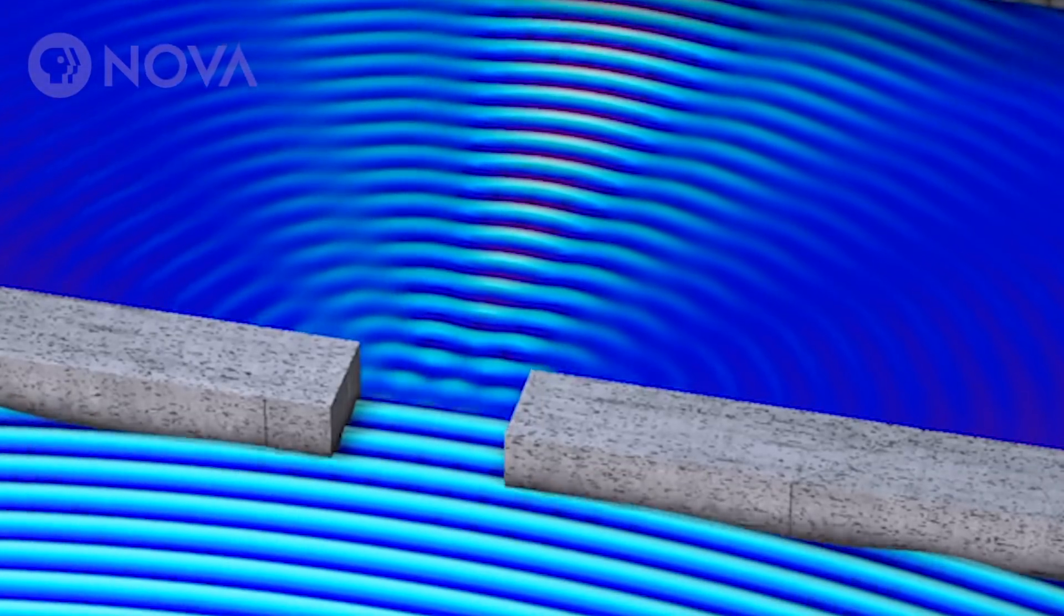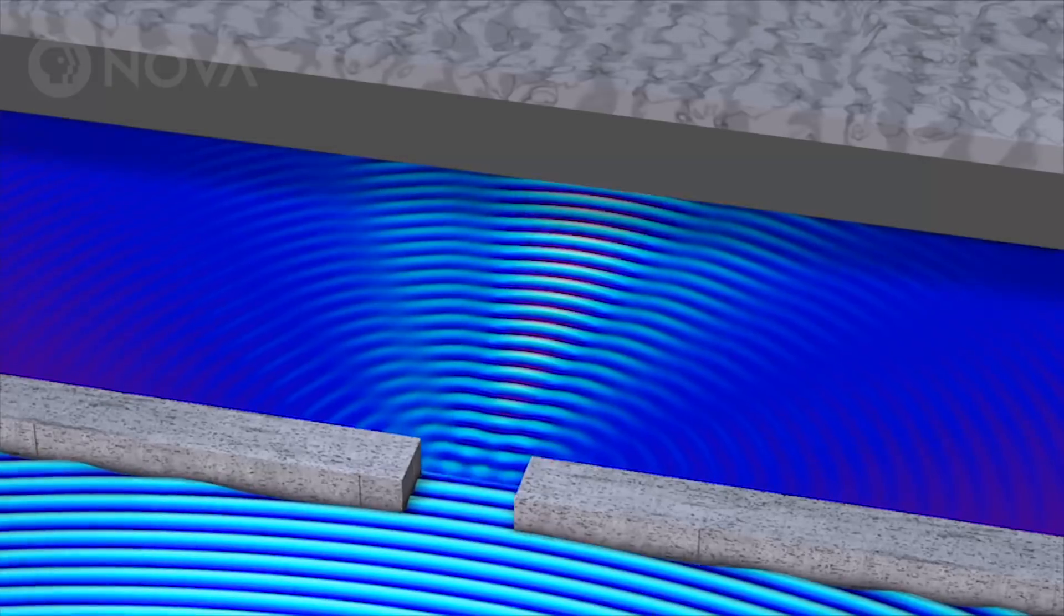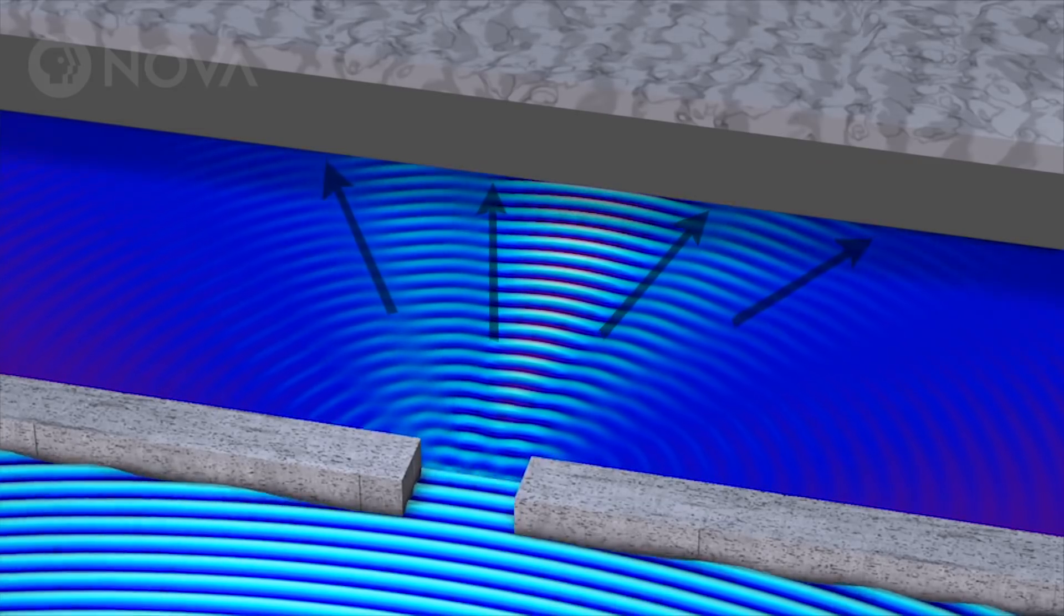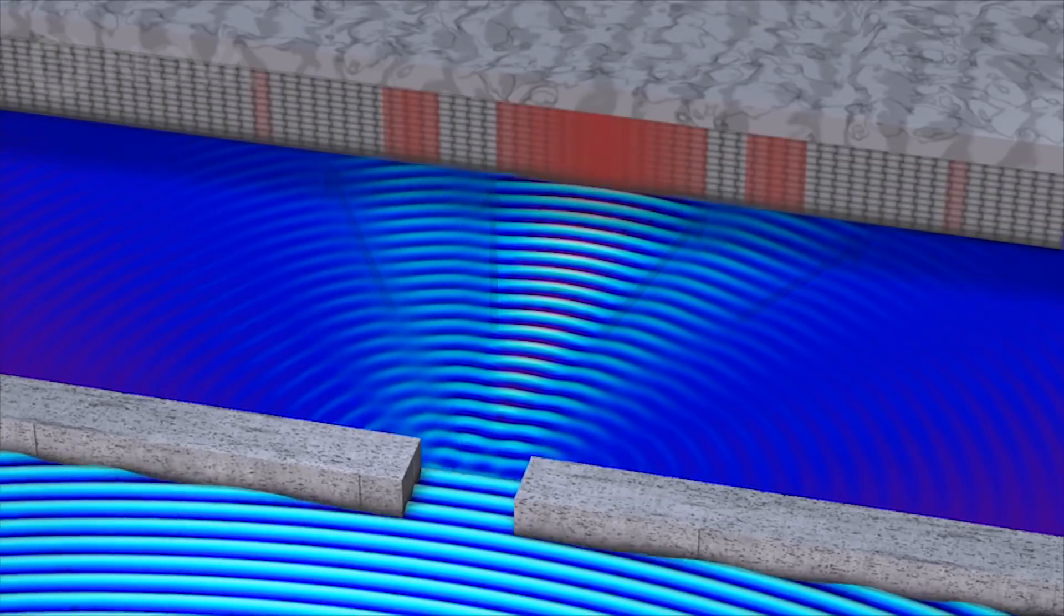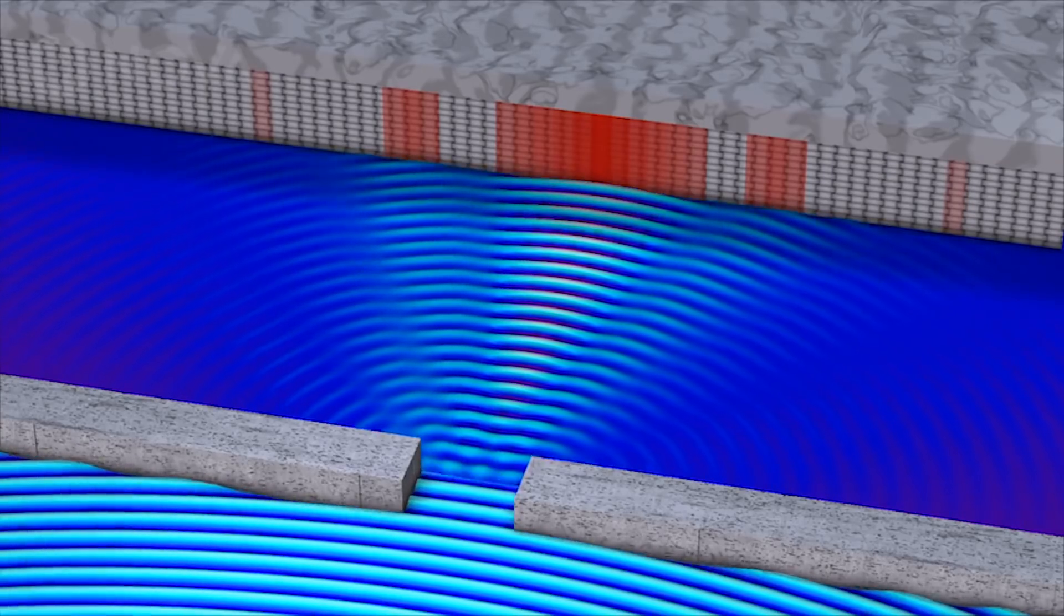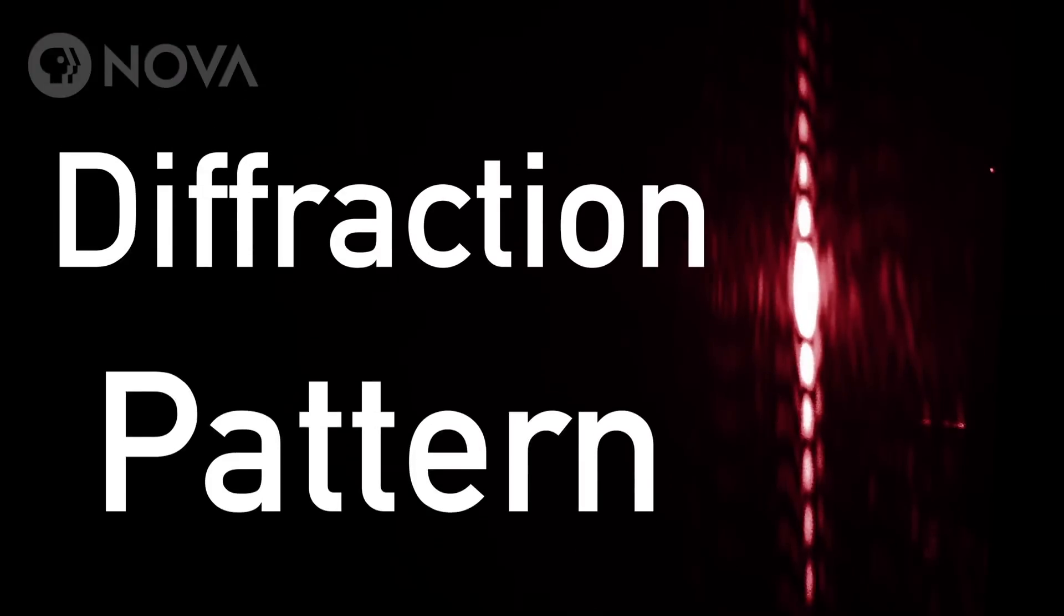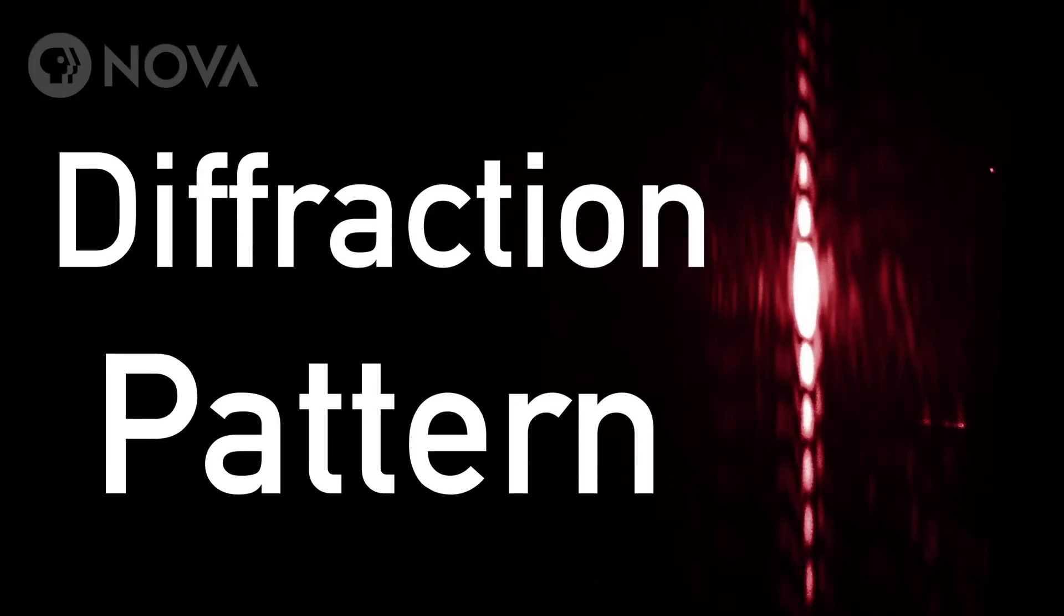If instead of laser light going through the slit you had water waves going through the slit, then there'd be places on the wall where there'd be waves crashing and other places where there are no waves. Those would line up exactly with the bright and dark places on the wall from our laser experiment. This pattern is called a diffraction pattern and is always created by some kind of wave.